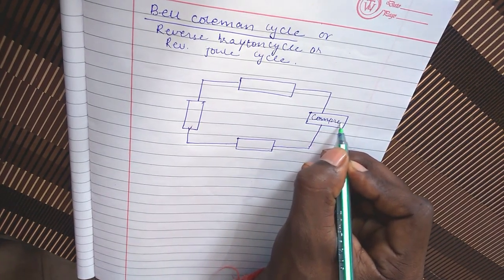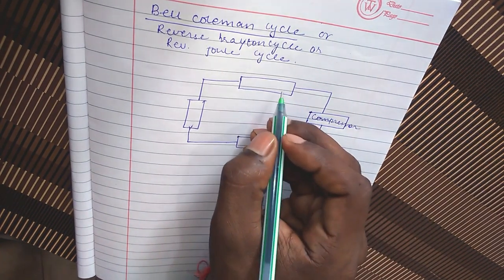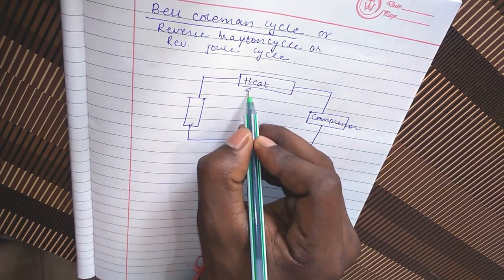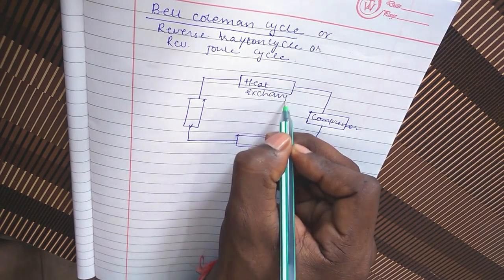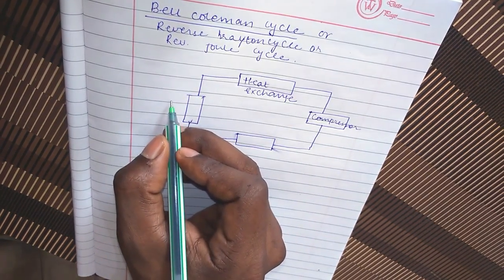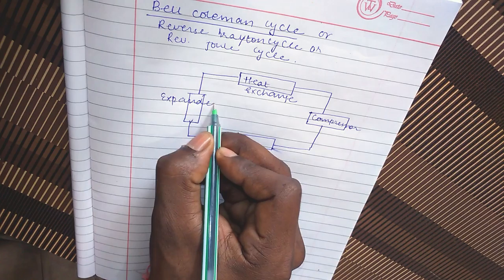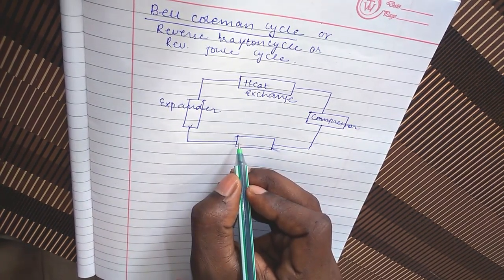So this is a compressor, this is the heat exchanger. This is a turbine or expander, and this is another heat exchanger.